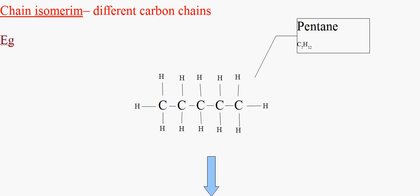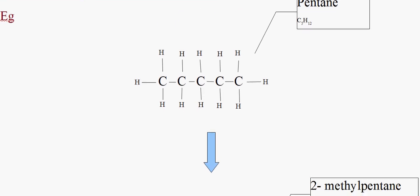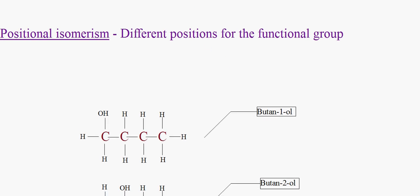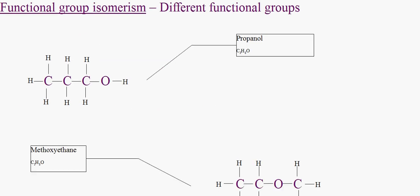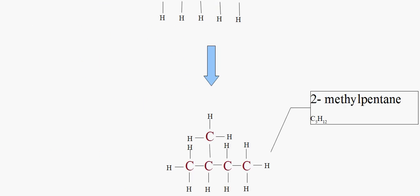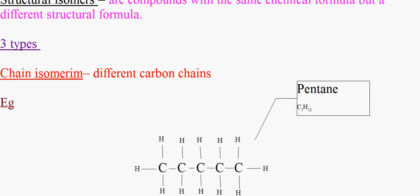So if you remember that all the way through, chain isomers all have the same chemical formula. Positional isomers all have the same chemical formula. Functional group isomers all have the same formula, but they just have different structural formulas.